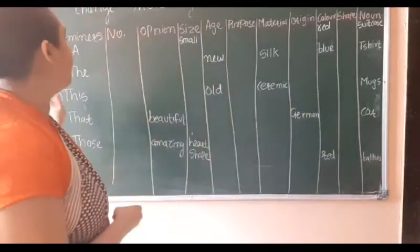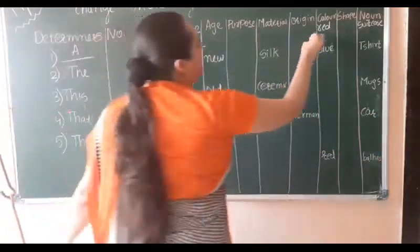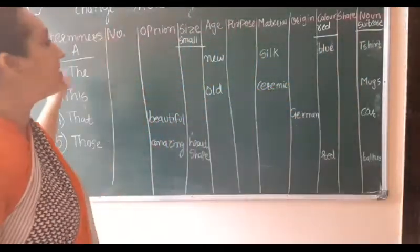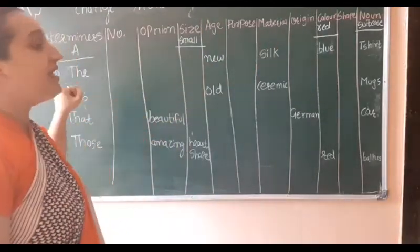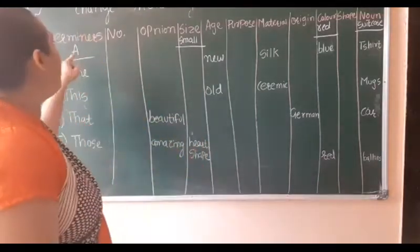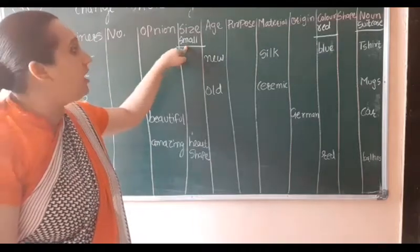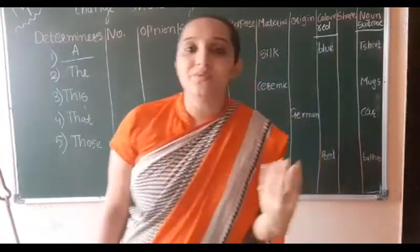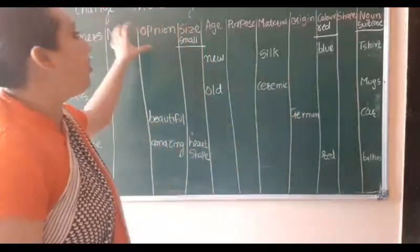Now let's see the example. For example: a small red suitcase. We have written it in a proper order. 'A' is a determiner, 'small' is size, 'red' is color, and 'suitcase' is the noun. In this way we have to divide it into such order.